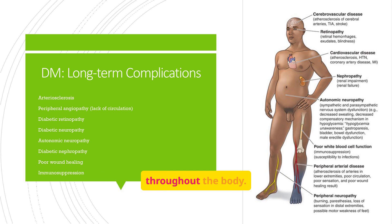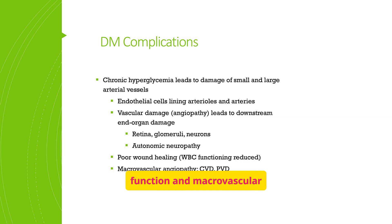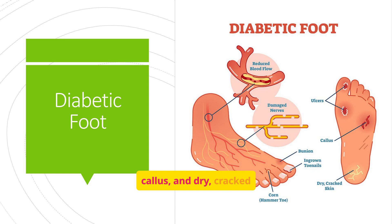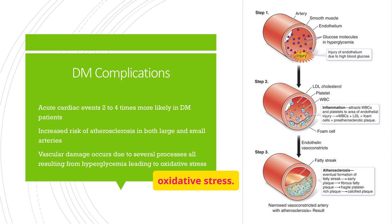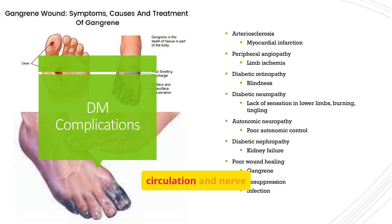Chronic hyperglycemia damages small and large arterial vessels, leading to angiopathy and downstream end-organ damage. Poor wound healing is also a common complication due to reduced white blood cell function and macrovascular angiopathy. Diabetic foot is a serious complication caused by reduced blood flow and nerve damage; symptoms include ulcers, bunions, ingrown toenails, callus, and dry, cracked skin. Acute cardiac events are more likely in diabetes patients due to increased atherosclerosis in both large and small arteries. Gangrene wounds are a severe complication characterized by ulcers, foul-smelling discharge, and discoloration, often associated with poor circulation and nerve damage.